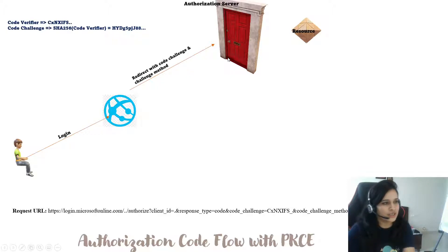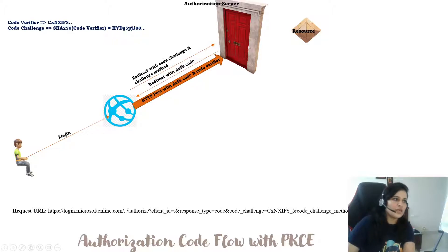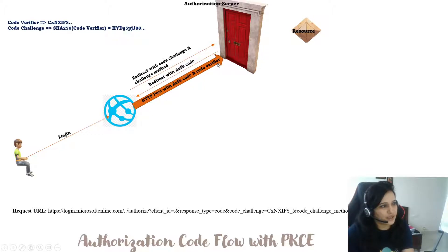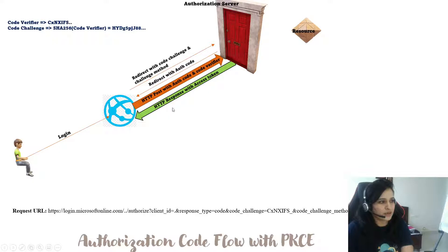The authorization server temporarily stores the code challenge and challenge method, then issues an authorization code. When the application requests a token, it passes both the authorization code and the original code verifier. The authorization server then generates a SHA-256 hash of that code verifier and compares it with the stored code challenge. If they match, the access token is issued.